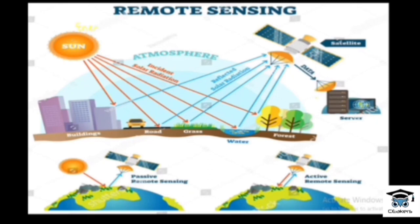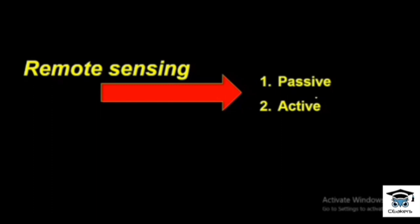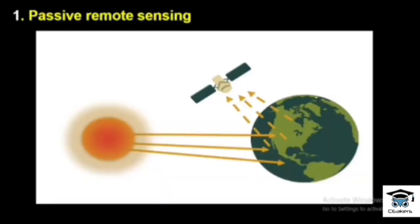We can classify remote sensing into two types: passive remote sensing and active remote sensing. The basis of this classification is the energy source. In passive remote sensing, a natural energy source is available — electromagnetic radiation from a natural source is reflected back to the sensors or satellites. That is passive remote sensing.